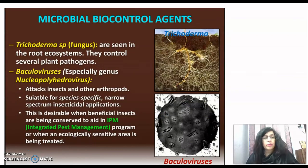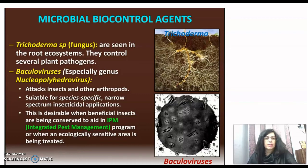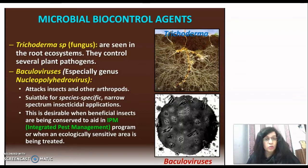The next example is Trichoderma species, which is a fungus. These fungi are found in root ecosystems and they control several plant pathogens. Trichoderma is another important microbial biocontrol agent used to protect plants from fungal diseases.